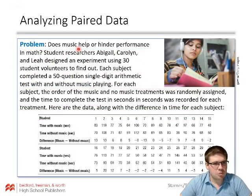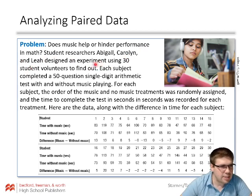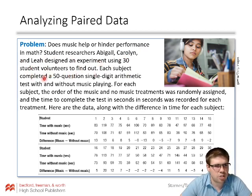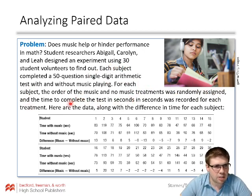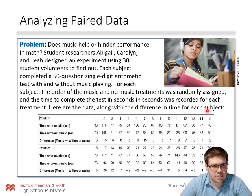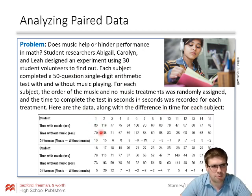Here's another paired data example: does music help or hinder performance in math? Student researchers Abigail, Carolyn, and Leah designed an experiment using 30 student volunteers. Each subject completed a 50-question single-digit arithmetic test both with and without music playing. For each subject, the order of the music and no-music treatments was randomly assigned. The time to complete the test in seconds was recorded for each treatment. Student one took 83 seconds with music and 70 seconds without, so the difference — music minus without — is 13 seconds.